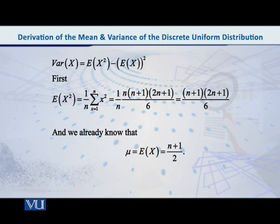If we expand this, it becomes 1 over n. And with it what is being multiplied? 1 square plus 2 square plus 3 square up to n square.